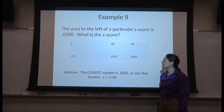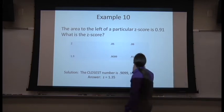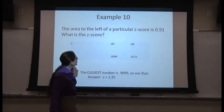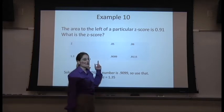Let's try another one like that. The area to the left of a z-score is 0.91. So look for something close to 0.91.